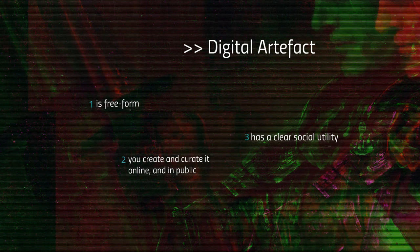The second criterion is that you create and curate your digital artifacts online and in public from the very beginning. This means that the moment you conceptualize it and start prototyping and testing it, your artifact should already be online and in public in its very early stage. And finally, and probably most importantly, your digital artifact has to have a clear social utility, meaning it has to have relevance to an outside audience — a user group which is not in the class or in the University.